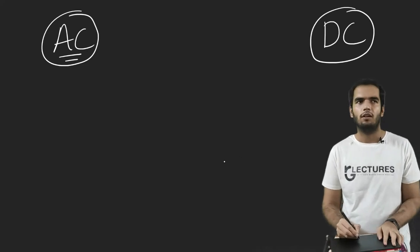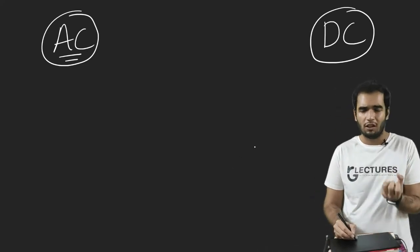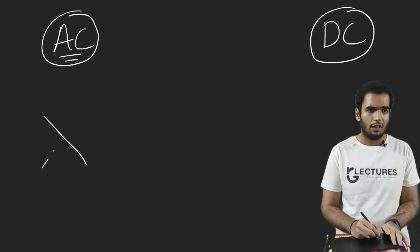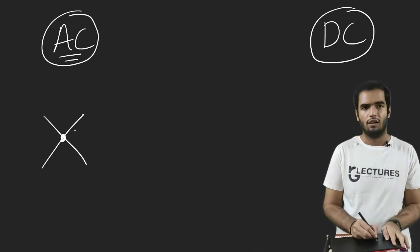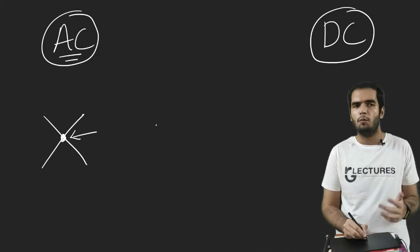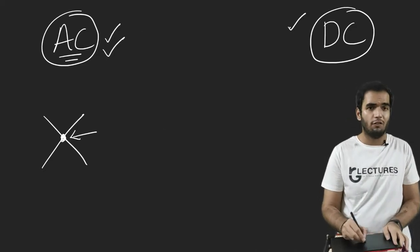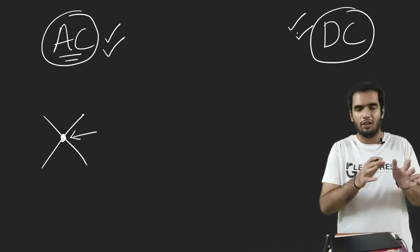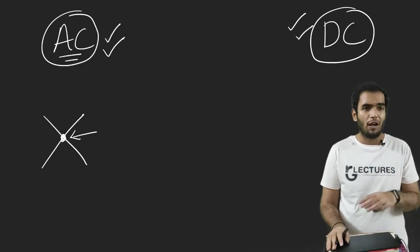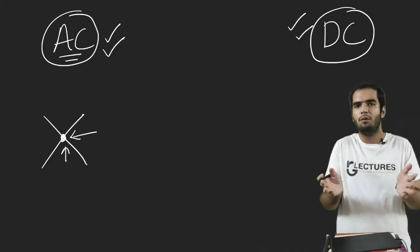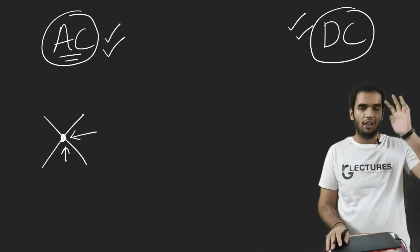Now suppose whatever electricity is coming to our house is AC, and whatever measuring instruments we have are of DC. So basically scientists were thoroughly searching, researching that some way there must be there that we establish a common point.